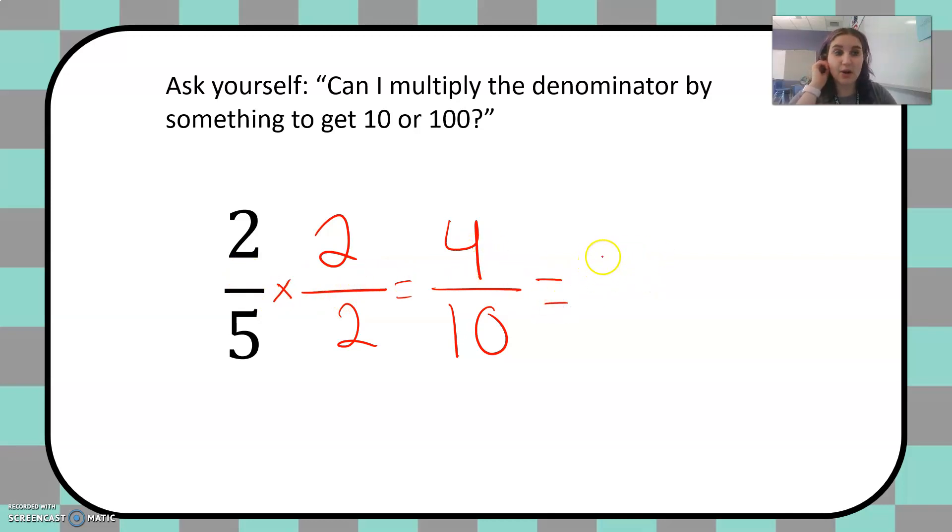Four-tenths I know how to write as a decimal: 0.4 with a four in the tenths place. Four-tenths. So that is writing our fractions as decimals. Let's try one more.